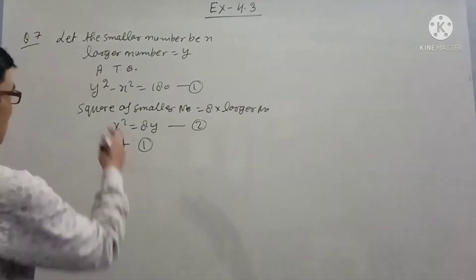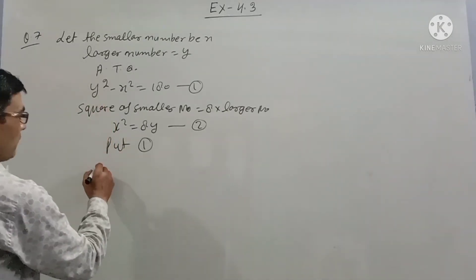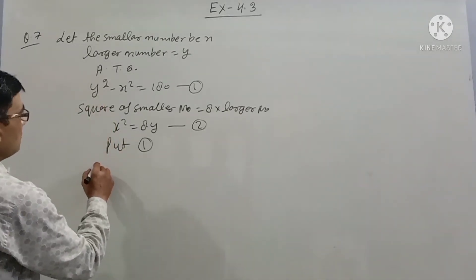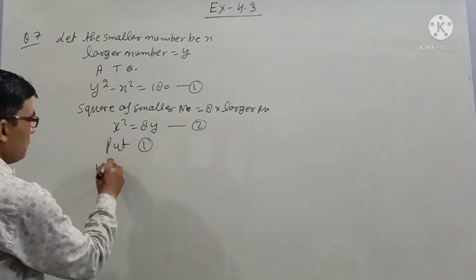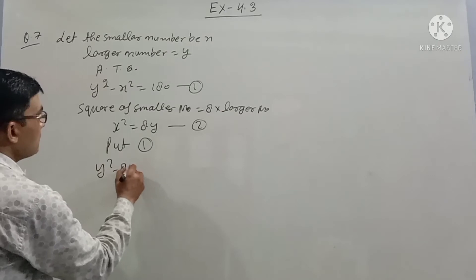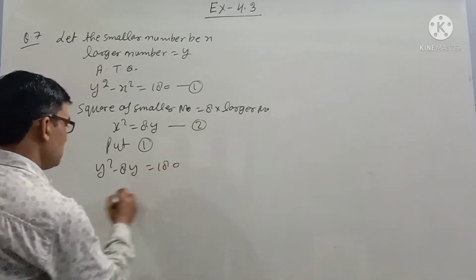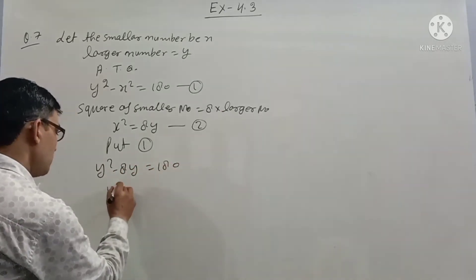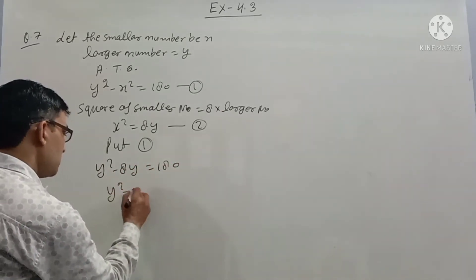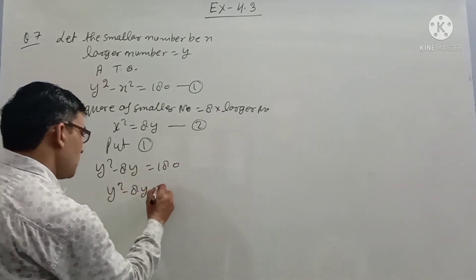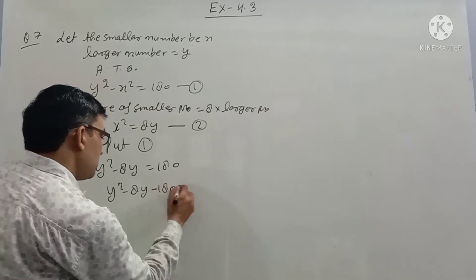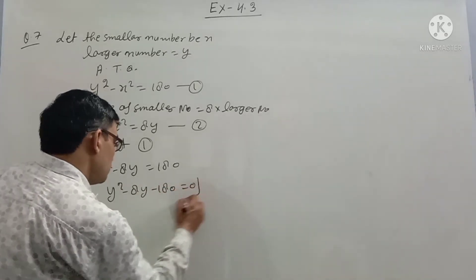Substituting equation 1 into equation 2: y squared minus 8y equals 180. Therefore y squared minus 8y minus 180 equals zero.